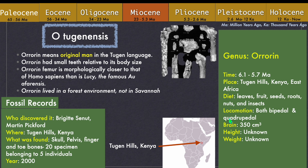Brigitte Senut and Martin Pickford discovered 20 specimens of skull, pelvis, finger and toe bones related to five individuals in the year 2000. These specimens were classified into a separate genus called Ororin. Ororin means "original man" in the Tugen language. The species was named Ororin tuganensis.